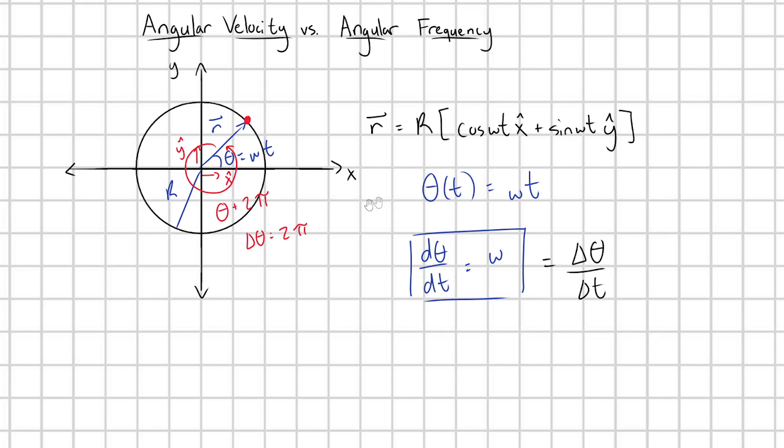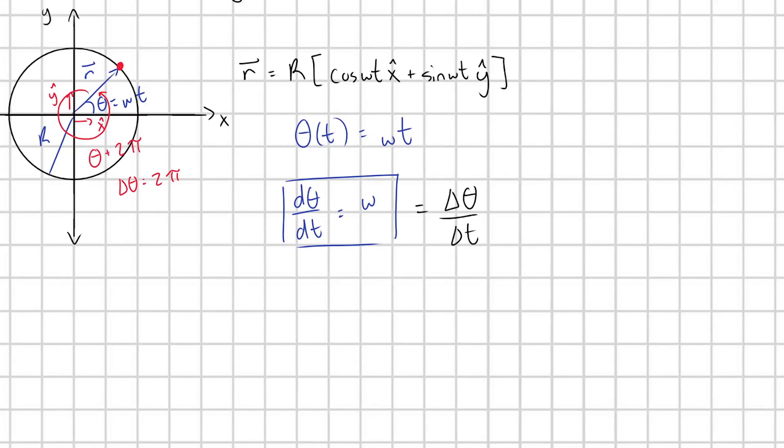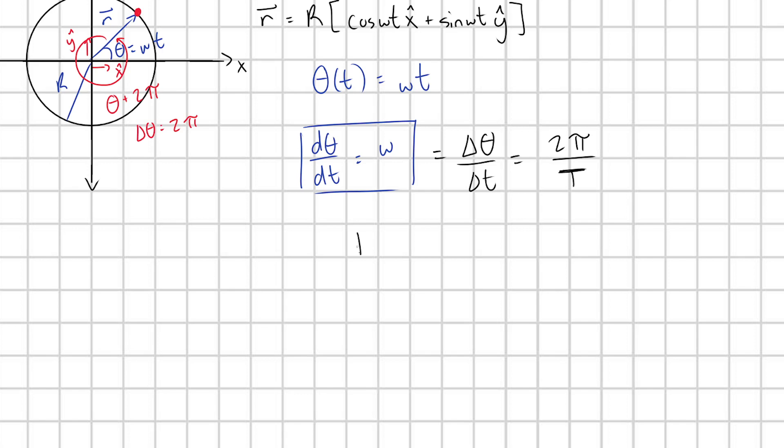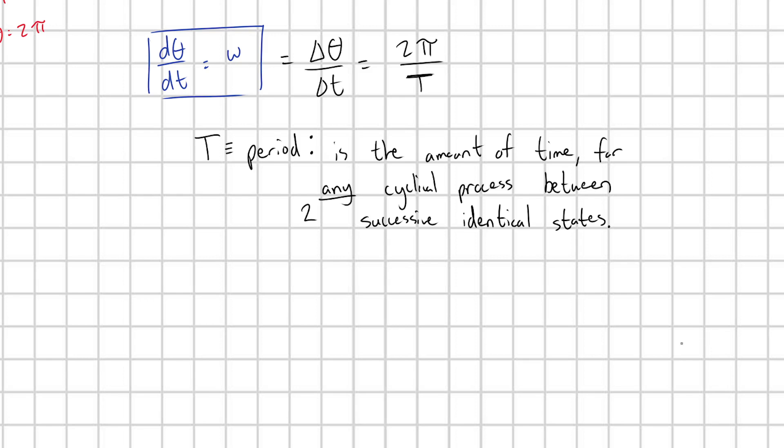We go ahead and define, so this is happening in, I'm just going to plug in 2 pi for delta theta. We give the change in time for this process a very special symbol and a special name, and we define it as the period. And we can define this period for any cyclical motion.